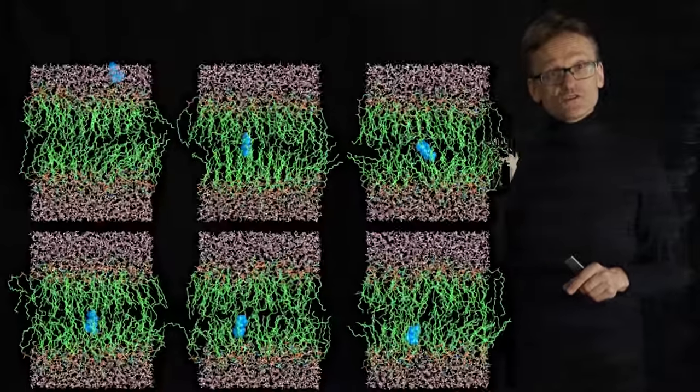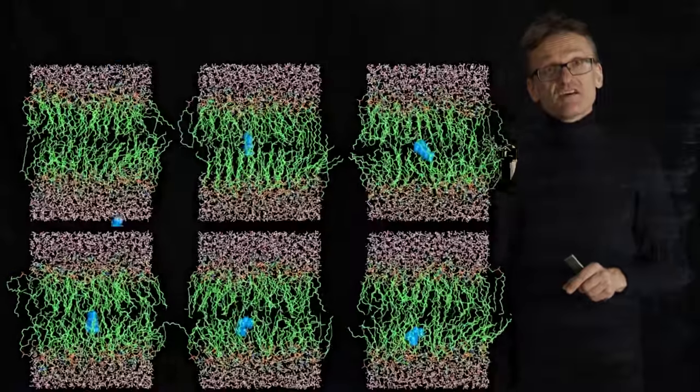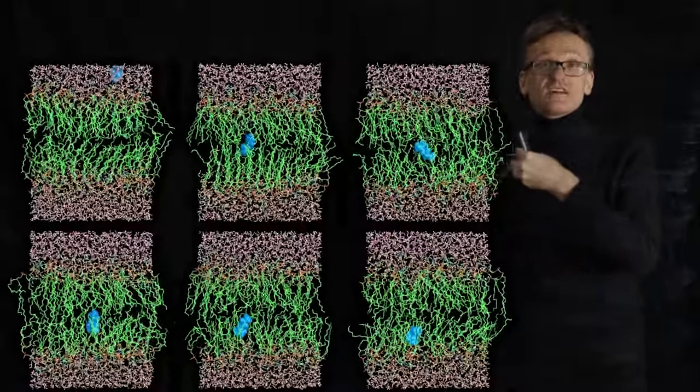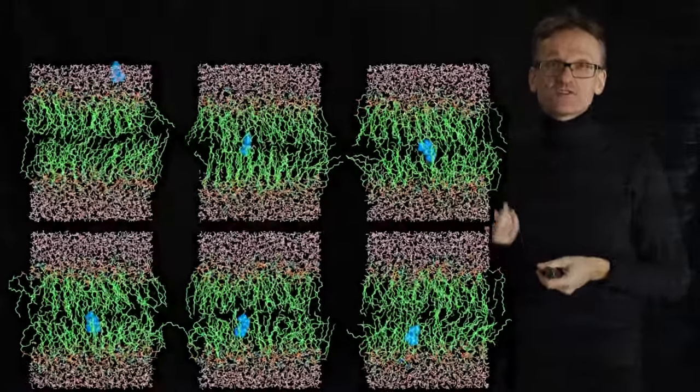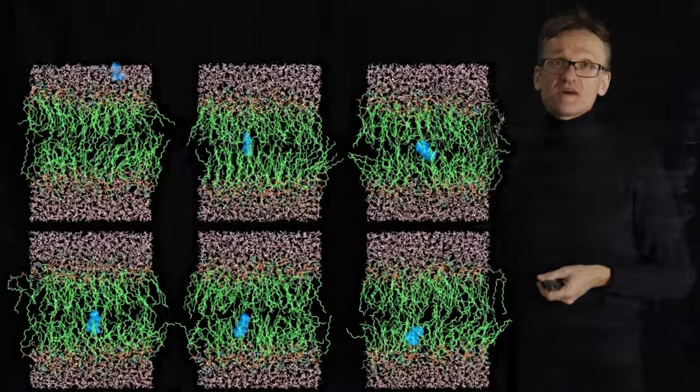But since I know this force, I can measure it because I'm applying it, right? I take that force, I average it, and I integrate it, and I get the potential of mean force of the cost of inserting amino acid side chains in bilayers.